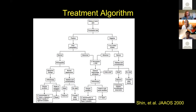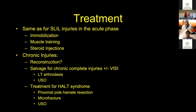How do we treat these injuries? This algorithm from Alex Shin at the Mayo Clinic about two decades ago: for pre-dynamic or incomplete injuries, immobilization has a very good chance of healing. Many that are not complete heal with immobilization alone, plus muscle training and steroid injections. For chronic or complete injuries, you're looking at reconstruction or salvage. For the LT side, the options are relatively limited: arthrodesis or fusion of the LT interval, or ulnar-shortening osteotomy. Treatment for HALT syndrome is simple proximal pole hamate resection, with some work looking at microfracture or ulnar-shortening osteotomy as well.